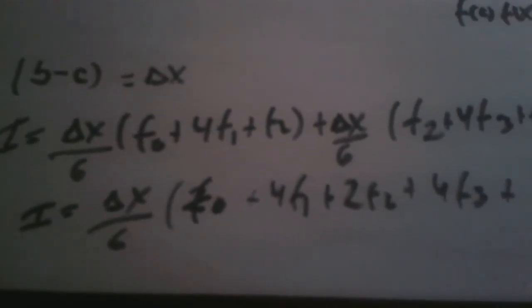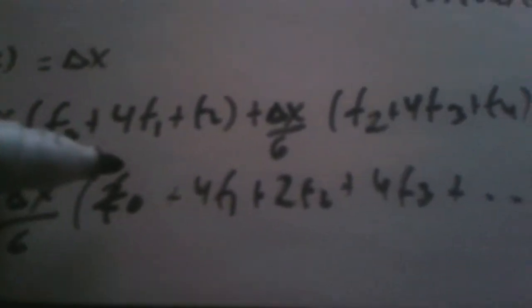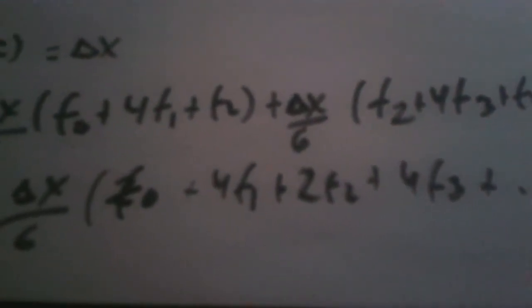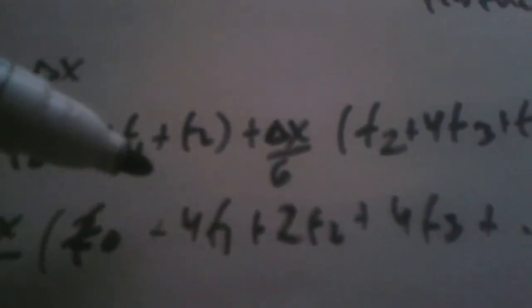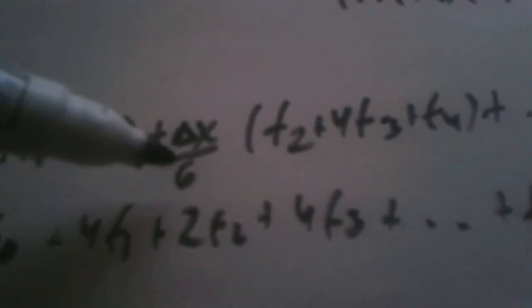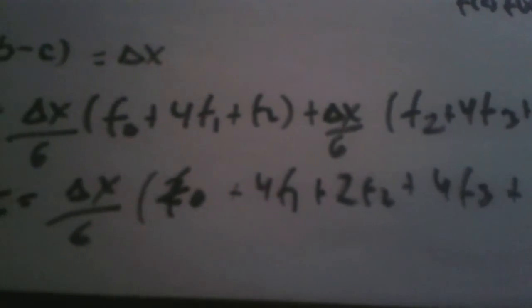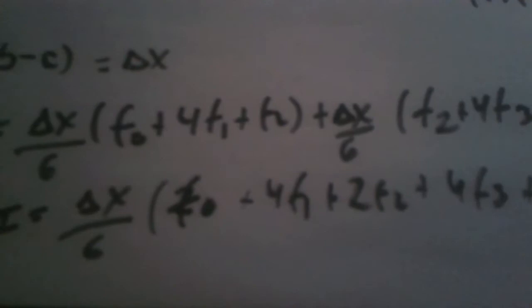We see that it's the sum of the initial and the last value of our interval domain only once. This time the iterative values alternate: the first interior value is four times, the second is two times, the third is four times, then two and four and so on. This is the best method to calculate an integral. Let's see some code.